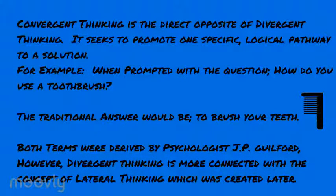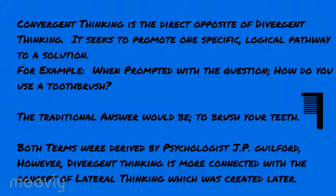It will be really important to give a juxtaposition to divergent thinking. Both of these terms were coined by J.P. Guilford, who was a psychologist. He derived the terms convergent thinking and divergent thinking. Convergent thinking — with emphasis — is the traditional form of thought. It's the direct opposite of divergent thinking in that it seeks to promote one specific, traditional, logical pathway to a solution. Again, it's one specific pathway to the solution.